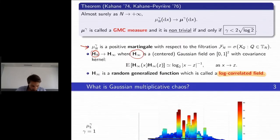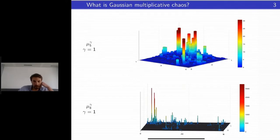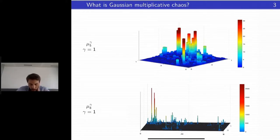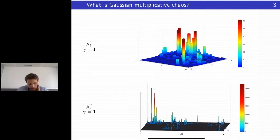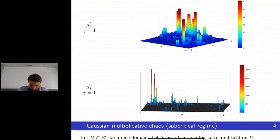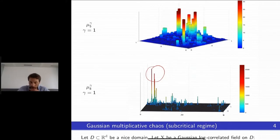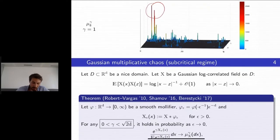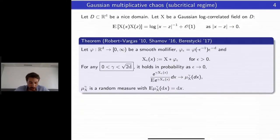Here are pictures of what the GMC measures look like. For 2^5 cubes you can see that the measure is really concentrated on some cubes — the red cubes get very high values and the measure tends to zero or is very small everywhere else. The intuition is that those high spikes carry information about the high-level sets of the maximum of the function.